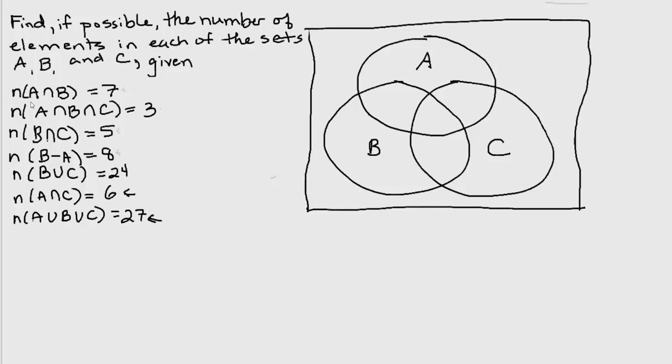For example, we're told that A intersect B has 7 elements, A intersect B intersect C has 3 elements, and so on. I've drawn a 3-set Venn diagram and labeled the sets A, B, and C. You'll notice that the Venn diagram actually divides our universal set U into 8 different regions.